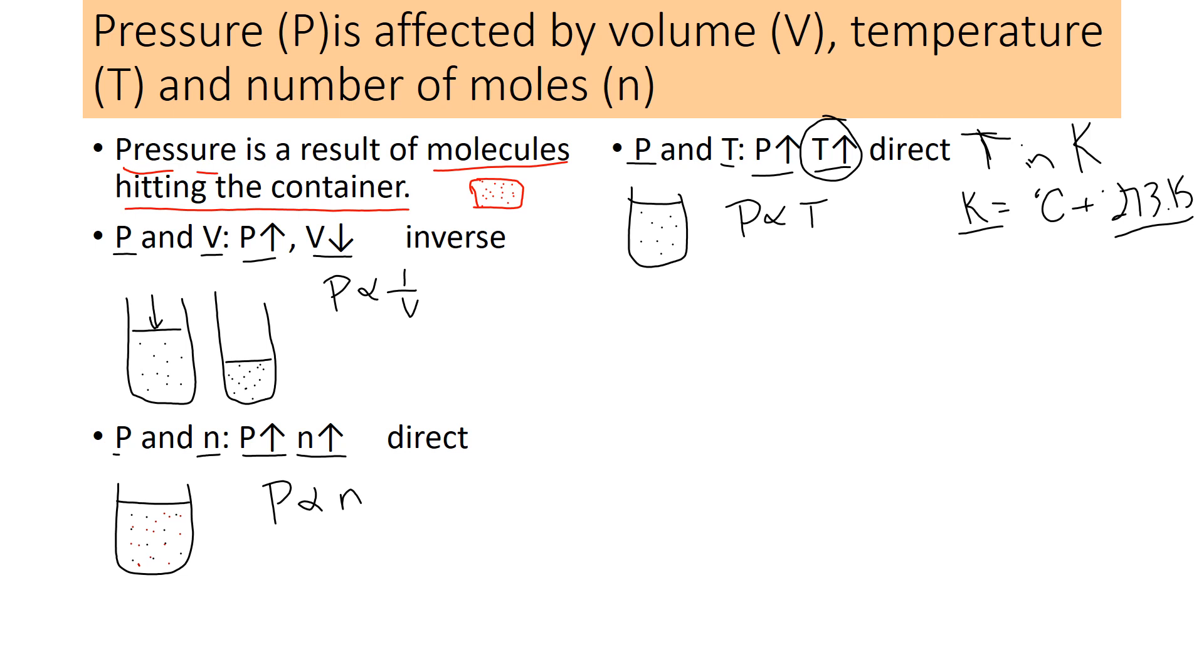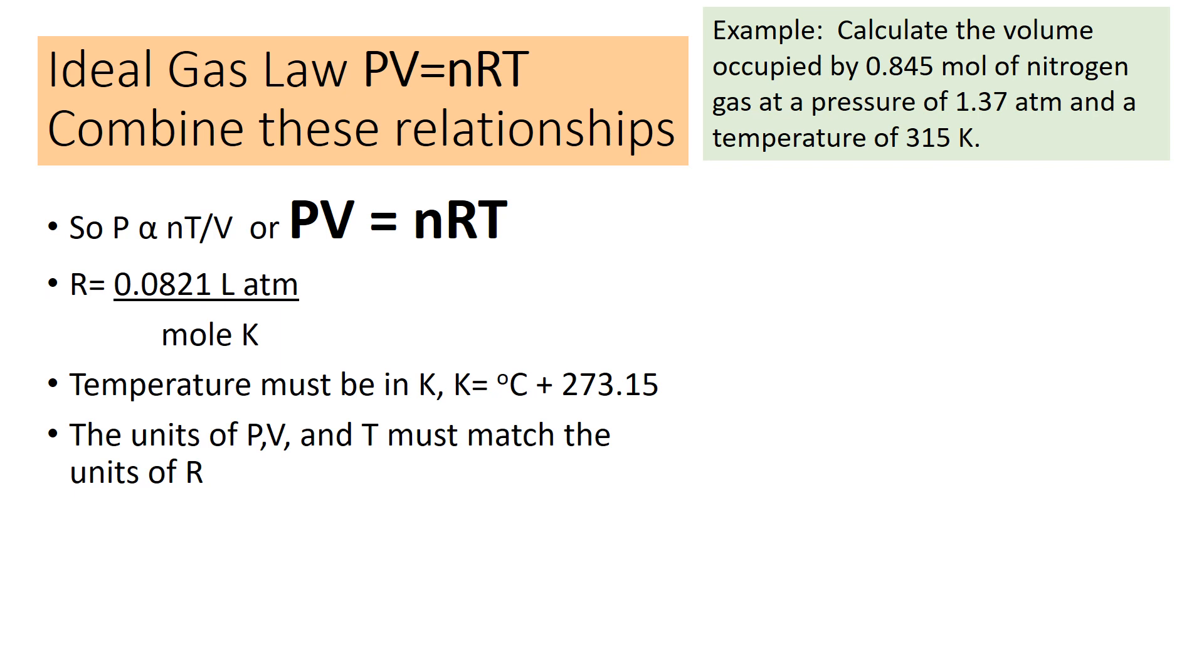So these are our three relationships. And what we're going to do is put them together into one equation, and that equation is called the ideal gas law. We have that pressure is proportional to n and T and inversely proportional to V. So we can say pressure equals nT over V if we put a constant. We're going to call the constant R. And then to avoid fractions, we're going to say PV equals nRT. And that is our ideal gas law. This is an important equation. It relates all the variables to each other.